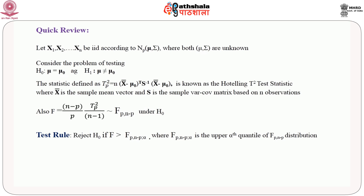The statistic (n - p) / (p(n - 1)) times T² is distributed as F with degrees of freedom p and n - p under the null hypothesis H₀. The test rule is that we reject H₀ if the statistic F is greater than F(p, n-p, alpha), which is the upper alpha quantile of the F distribution with the corresponding degrees of freedom.